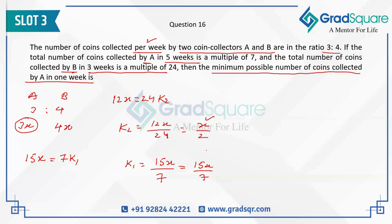So x should be a number divisible by 2, and x should also contain a factor of 7. The lowest possible value of x satisfying both conditions is 14. Another value could be 28, but we want the lowest possible value. So 3 times 14 gives you the answer, which is 42.